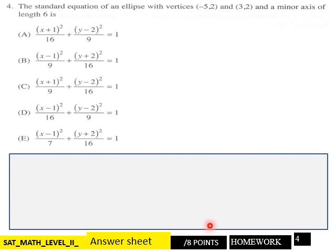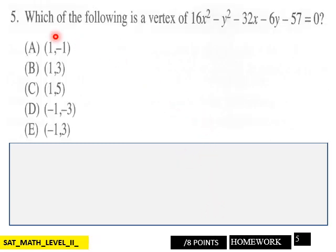Page 5: which of the following is a vertex of 16x squared minus y squared minus 32x minus 6y minus 57 equals 0? Which of the following is a vertex of this? And that's eight points here, page 5.